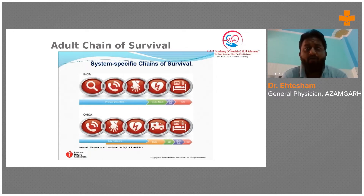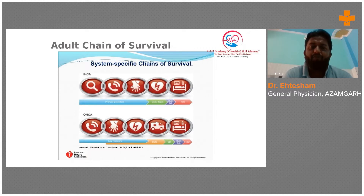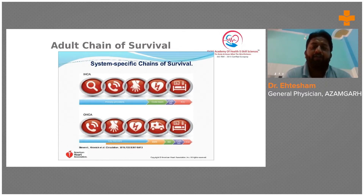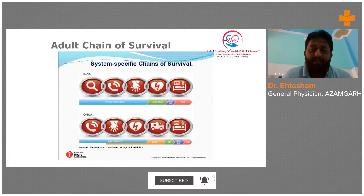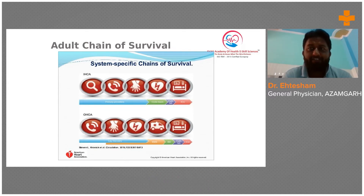Now, what is the difference in the pre-hospital setting? In the pre-hospital setting, we have to actively activate the EMS system followed by high quality CPR. When you activate the emergency system, the dispatcher will ask questions. You inform the dispatcher that someone has collapsed with no pulse and no breathing — the dispatcher immediately recognizes this as cardiac arrest and dispatches an ambulance with an AED.